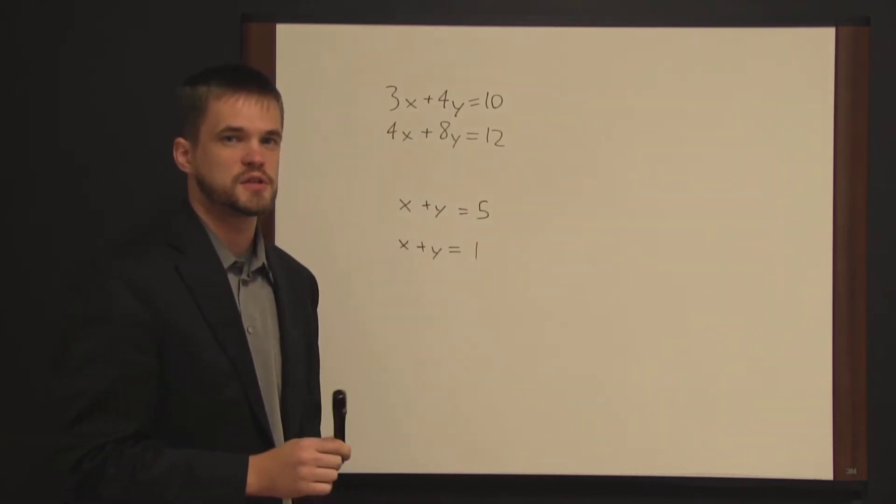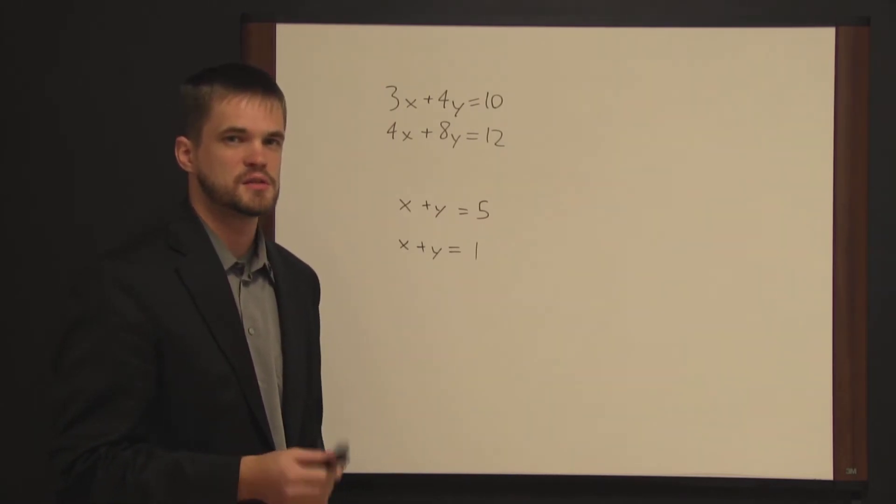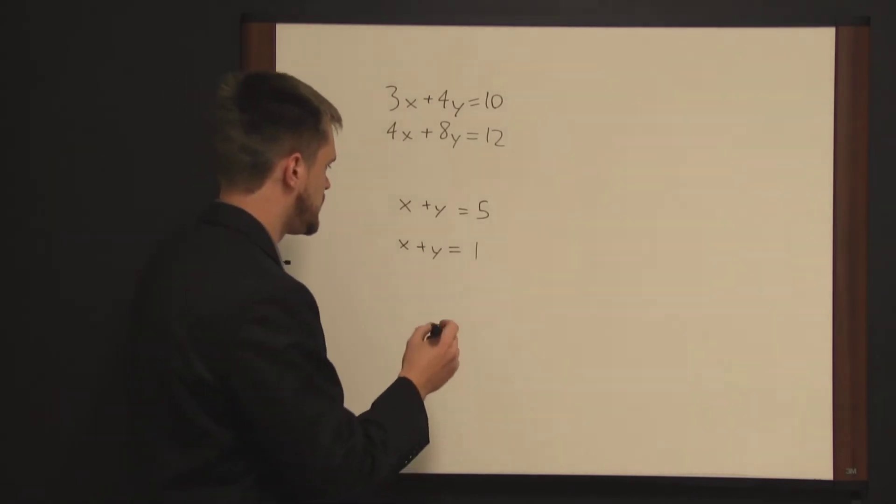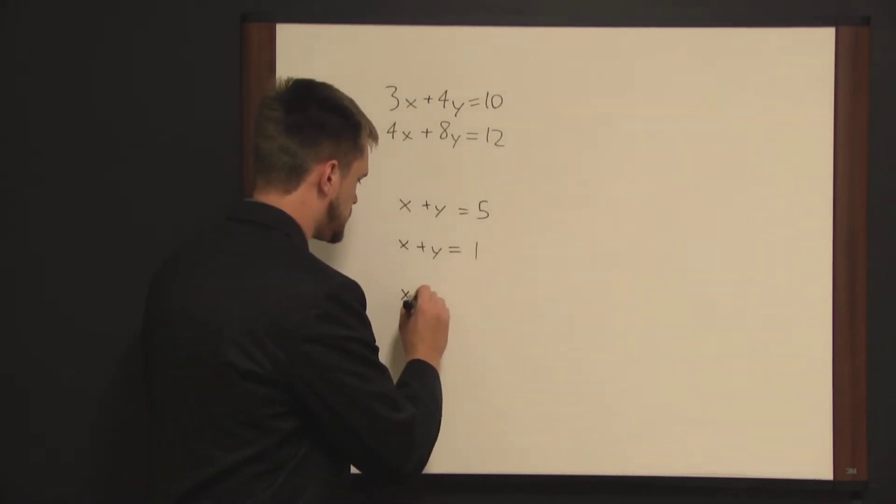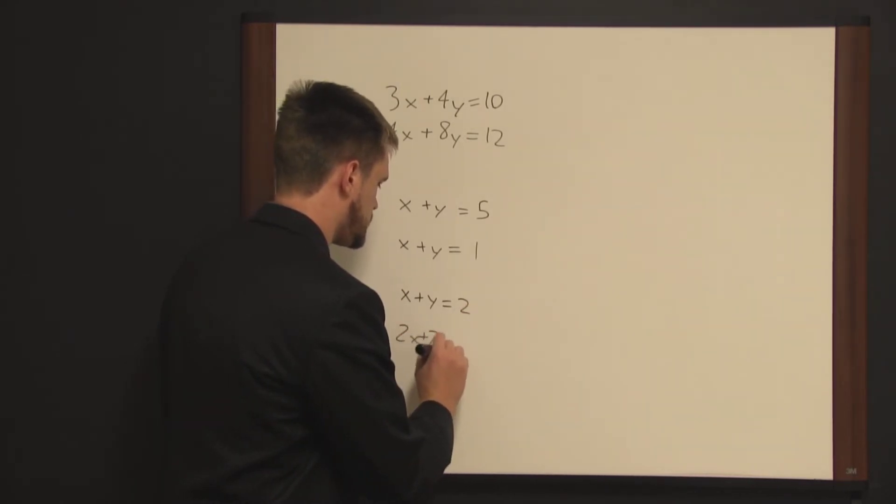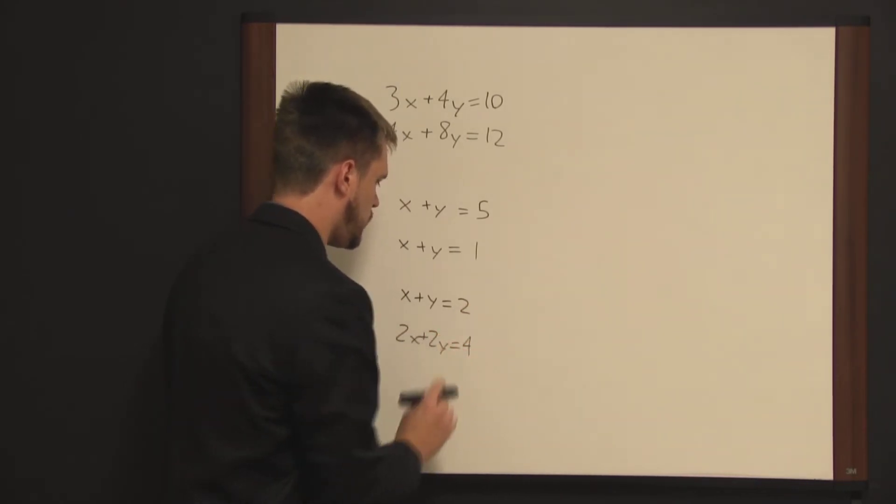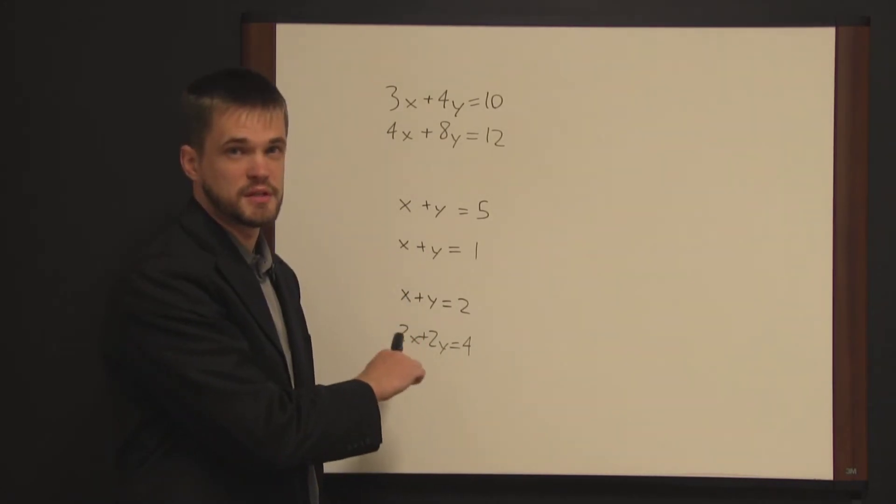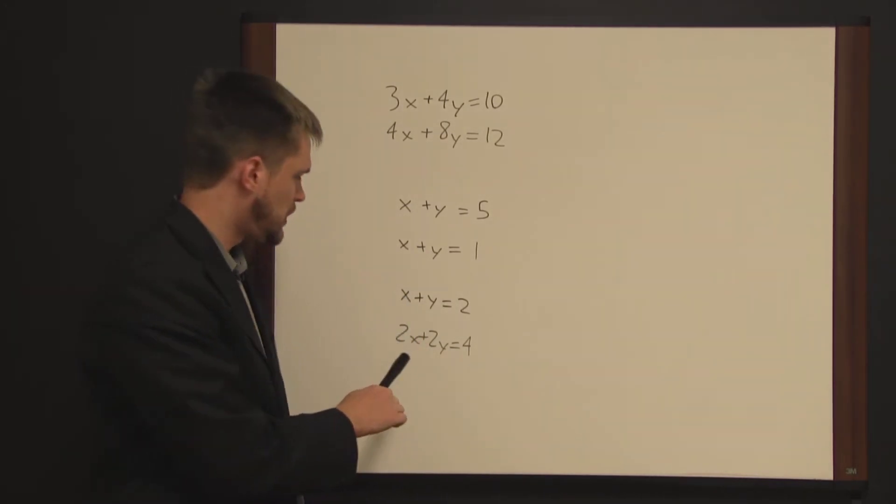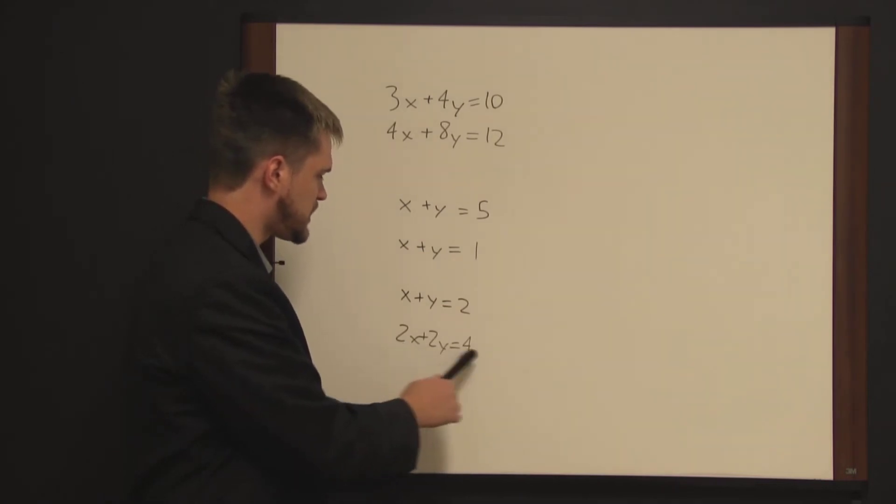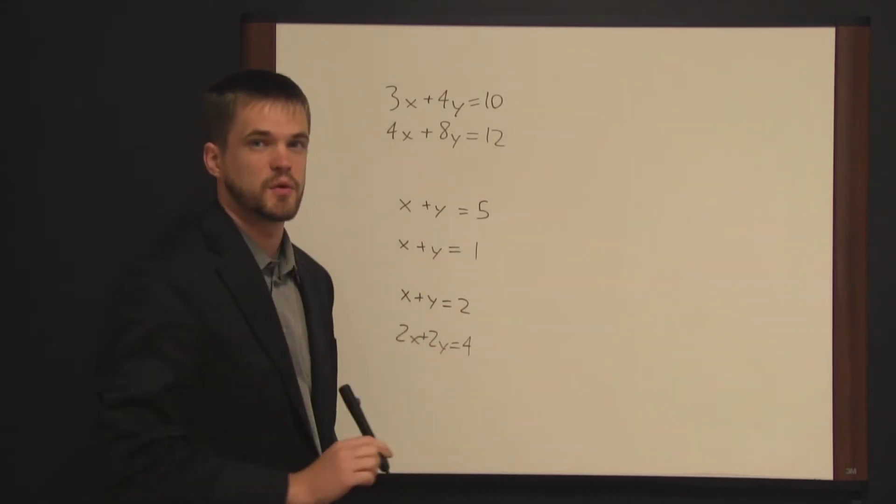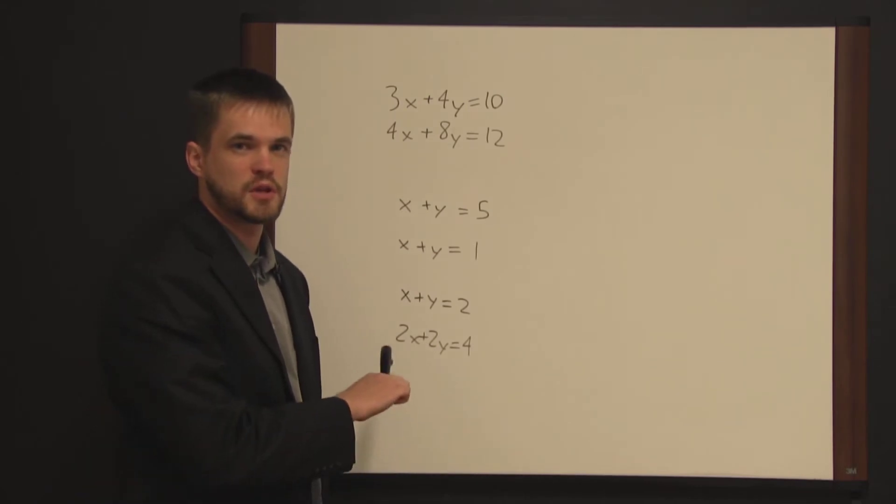The other situation where you can't solve for values is if the two equations are redundant. For instance, if we have x plus y equals 2 and 2x plus 2y equals 4, these two equations are redundant because they tell us the exact same thing. If we divide each term in this second equation by 2, what we're left with is equation 1. And so, it's really no better than having just one equation. We can't solve it for the values for these two variables.